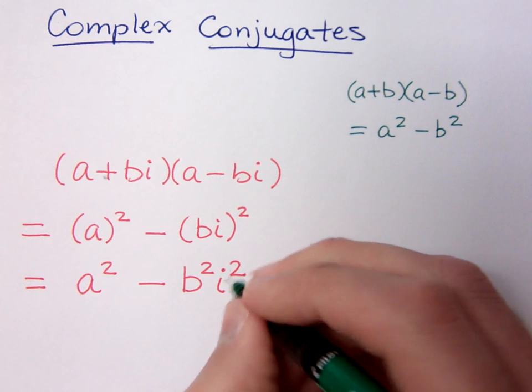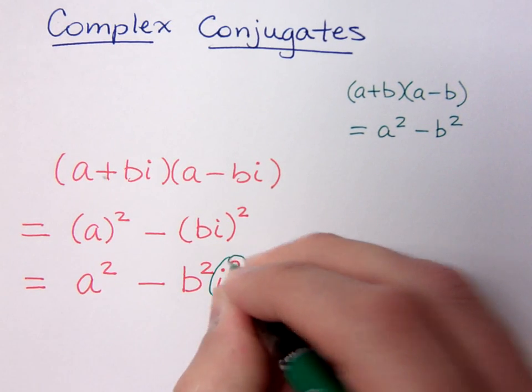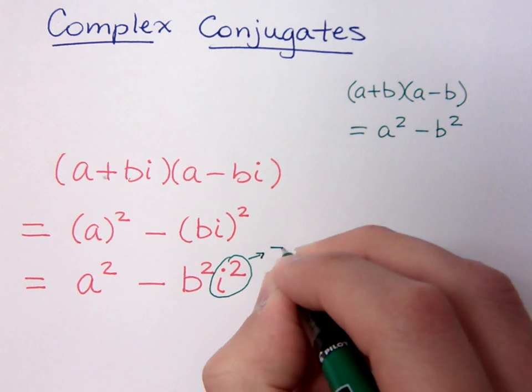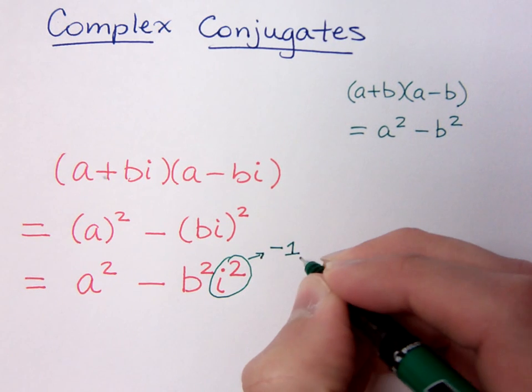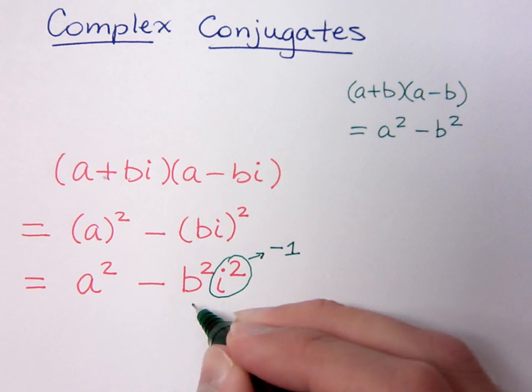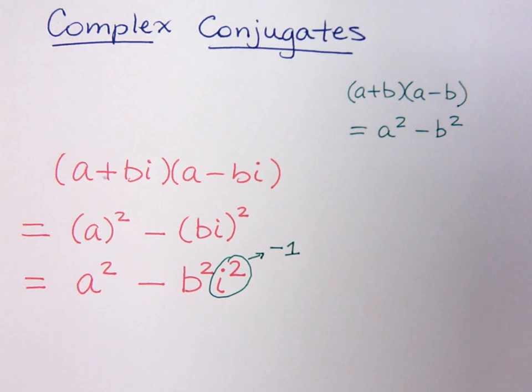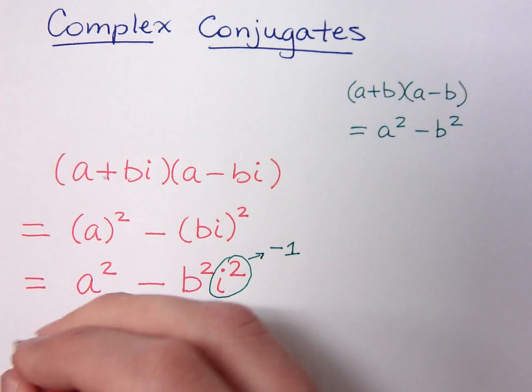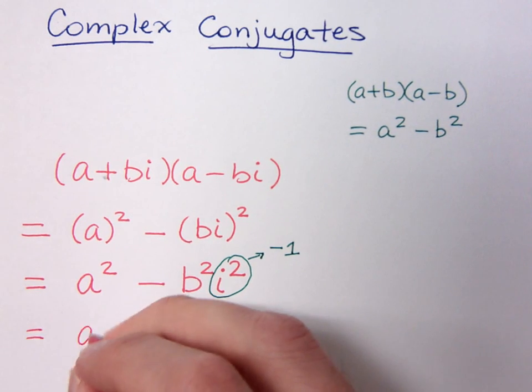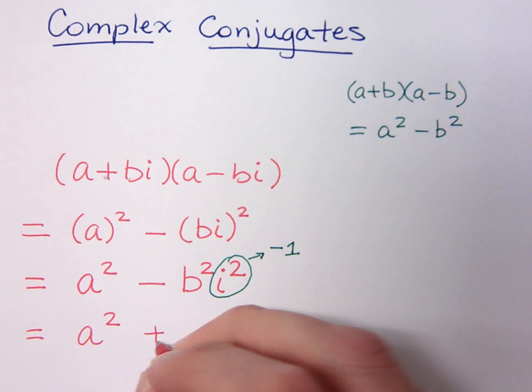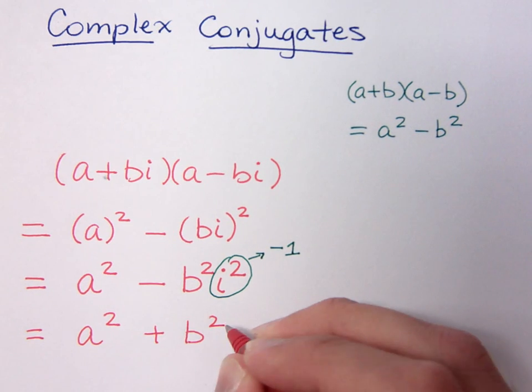If you remember, i squared gives you a factor of negative 1. So i squared times b squared, or this negative b squared, is going to actually change that sign. And then that will become a squared plus b squared.